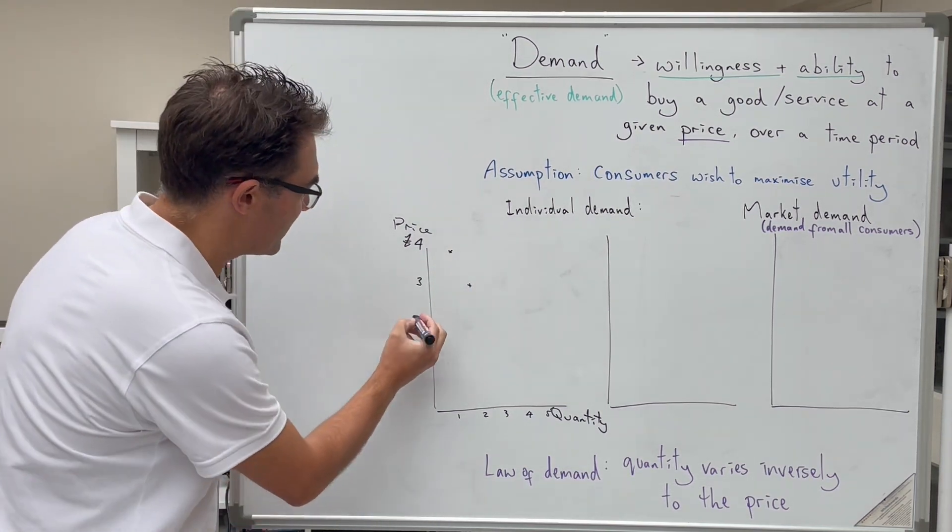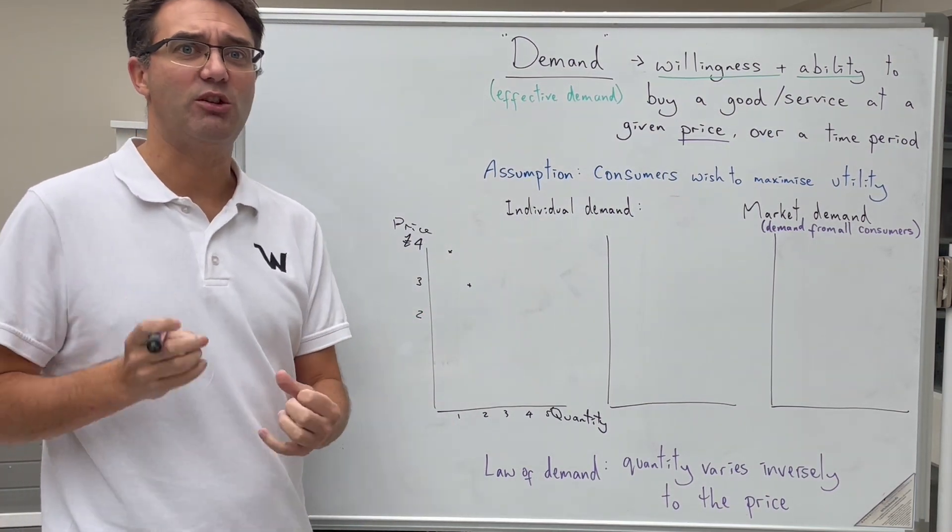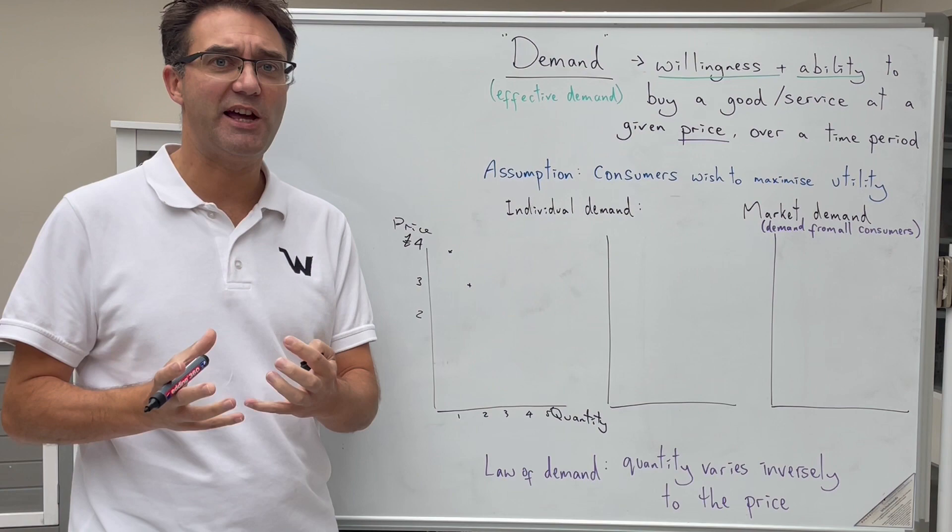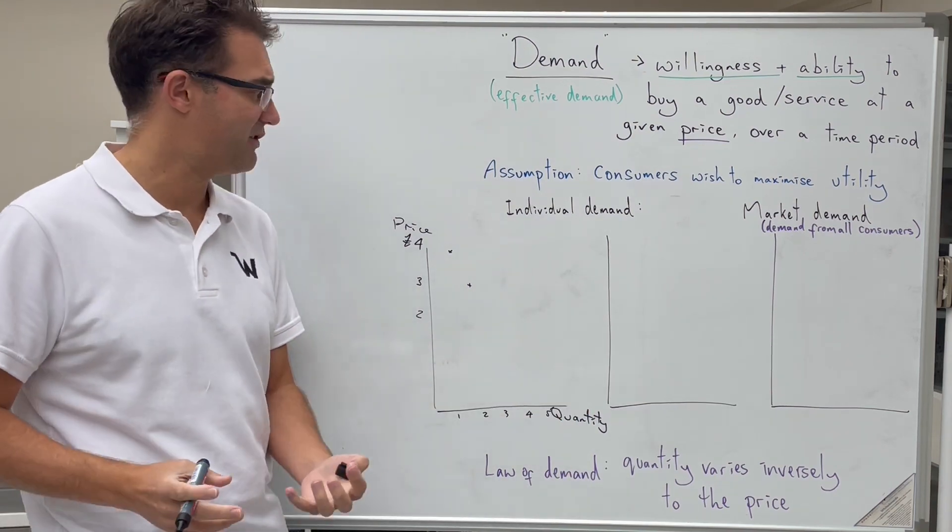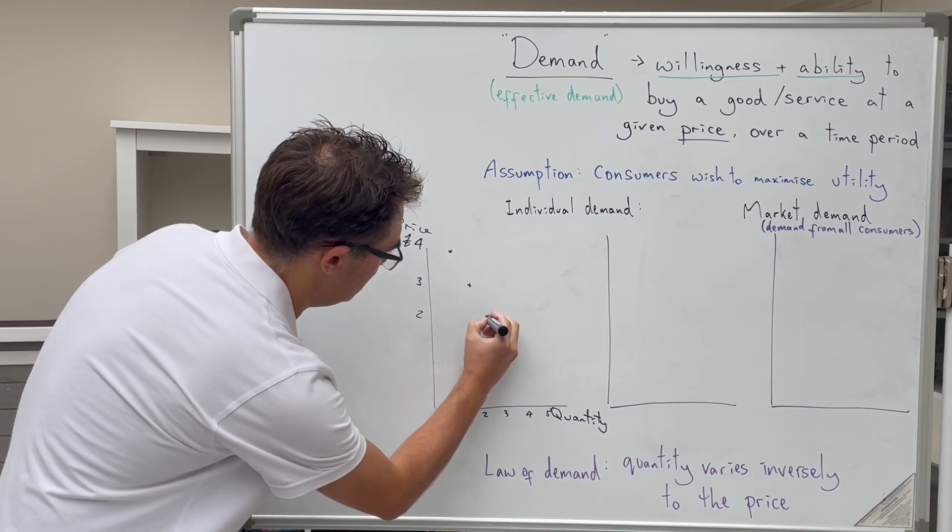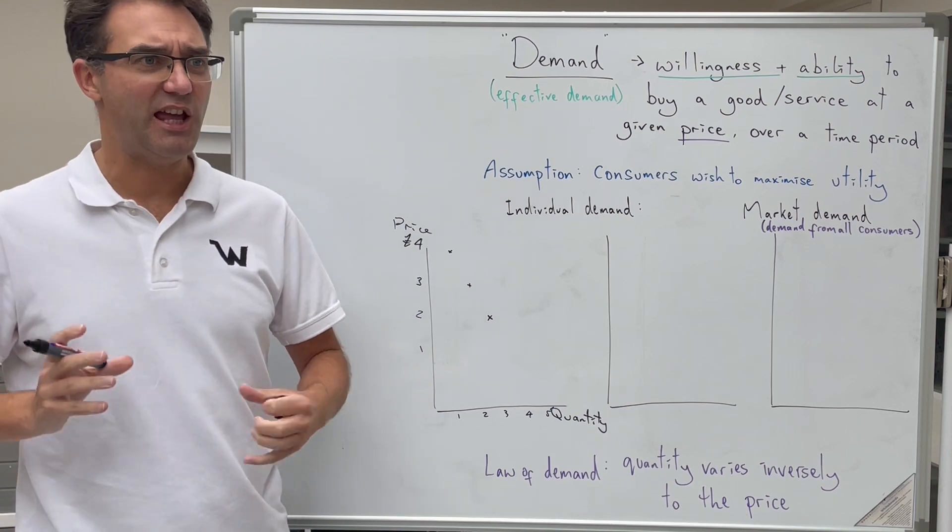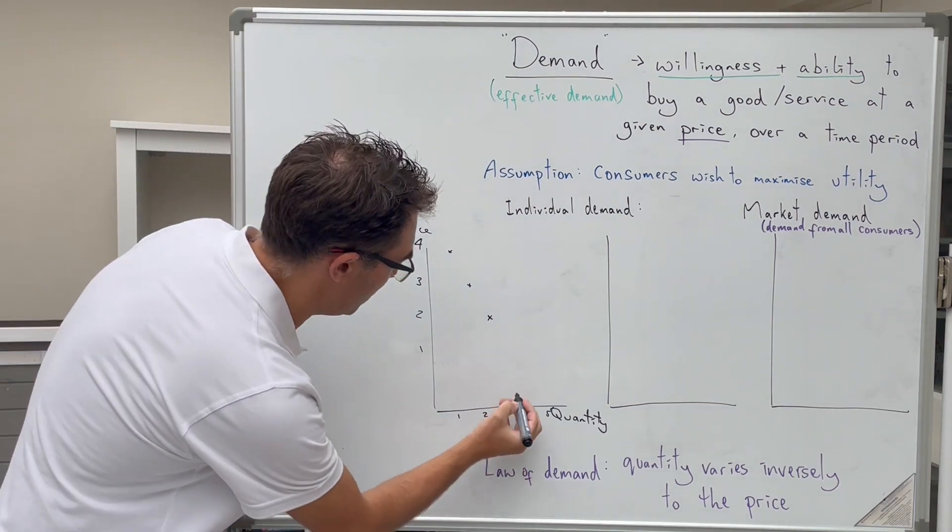If the price was lower still, down to £2, I'd say yes that's a great deal, I want to buy more of these and I'm going to buy them at the expense of other goods and services. I'm going to buy three. And if the price came down to £1, I would look at that and go, even better deal, I'm going to buy four.